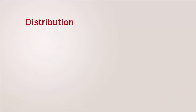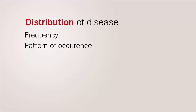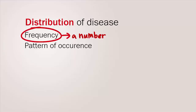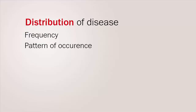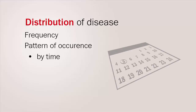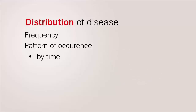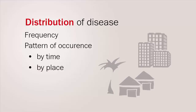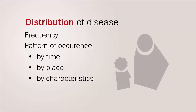The distribution of disease can be shown as the frequency and pattern of occurrence. Frequency can be a number or the rate of risk of disease in a population. The pattern of occurrence can be described by time — for example, an annual or a daily occurrence — or by place, for example, a rural or an urban location.